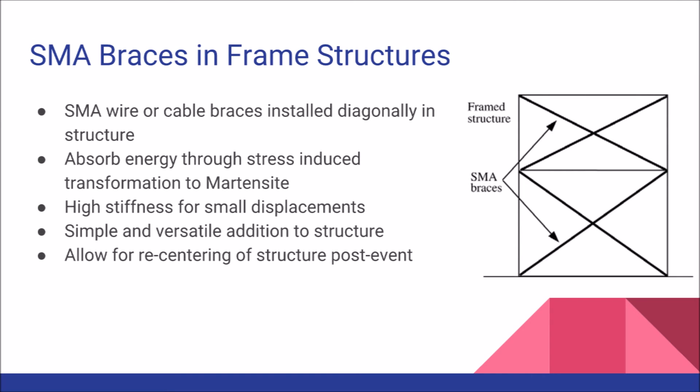First, we look at the use of SMAs in bracing in a frame structure. In this particular design, the SMAs are installed diagonally as supporting material for the rest of the structure. The SMAs plastically deform with the structure during cataclysmic events, but are ideally stiffer in these circumstances because minimal displacement is more desirable. This simple and versatile addition ensures structural stability, especially during seismic events, where they allow the structure to elastically return to its original state post-event.